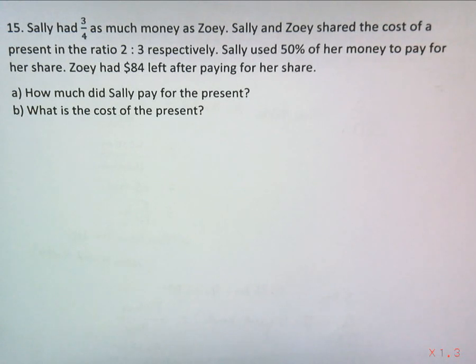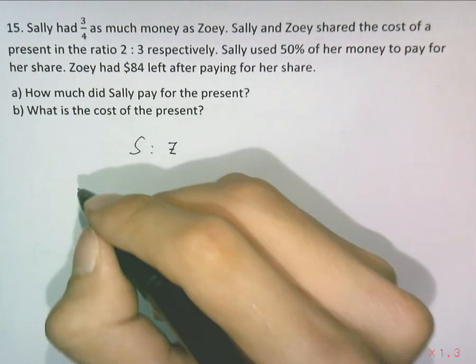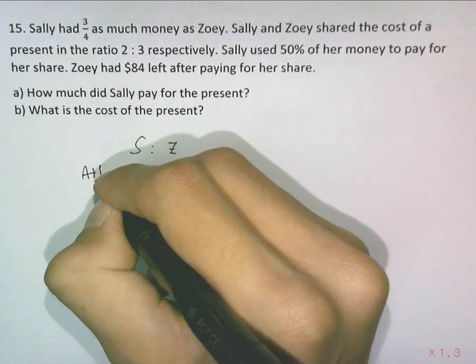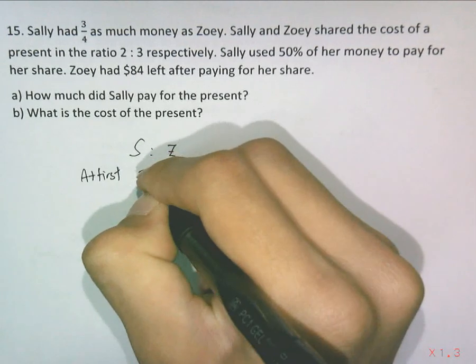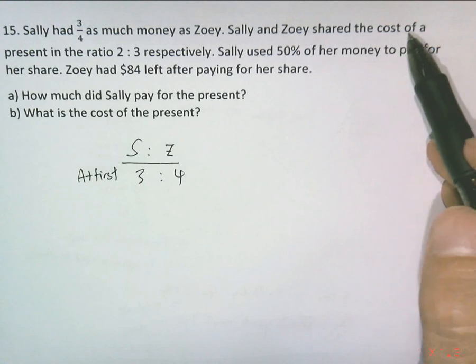Sally had three-quarters as much money as Zoey, so Sally to Zoey, this is the amount of money. Let's put it as at first, 3 is to 4. So Sally and Zoey shared the cost of a present.